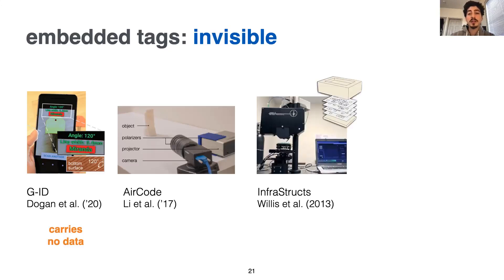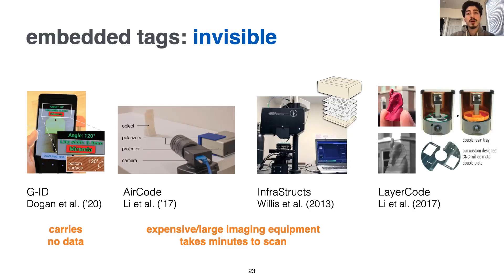Area code and InfraStructs were the pioneers in showing how invisible data bits can be embedded as air gaps within the object surface. However, these tags are decoded using expensive or large imaging tools, which also require scanning times on the order of minutes. Infrared-based layer codes have barcodes that can be imaged using cheap cameras. However, they require the hardware and software of the SLA printer to be modified.